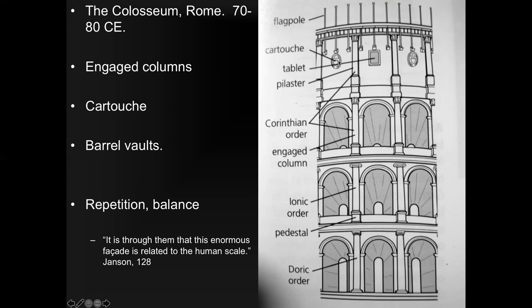Also, barrel vaults go into the inside and allow people to look to the outside — that's a repetition and balance. As Janson says, it is through them that this enormous facade is related to the human scale, exactly as we had seen in the sanctuary earlier.